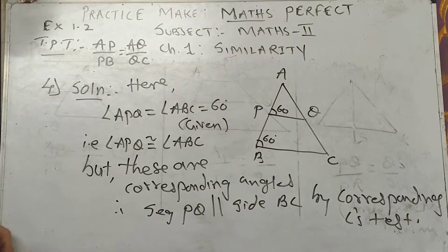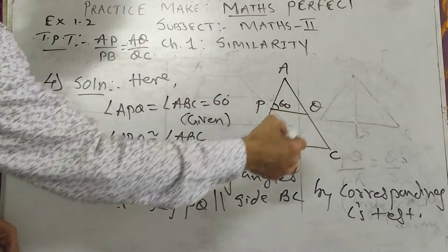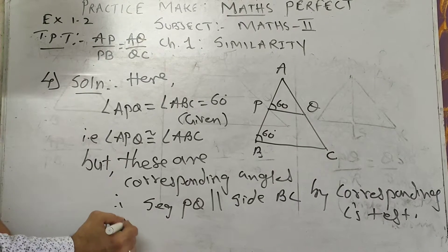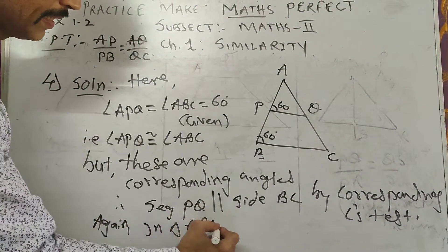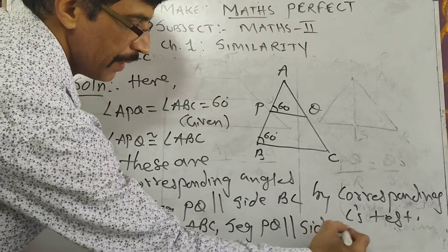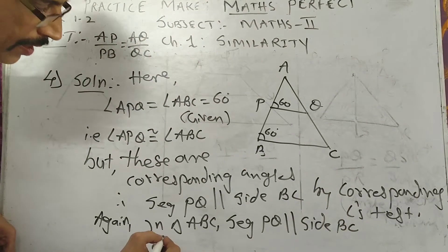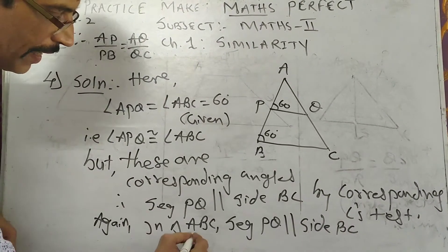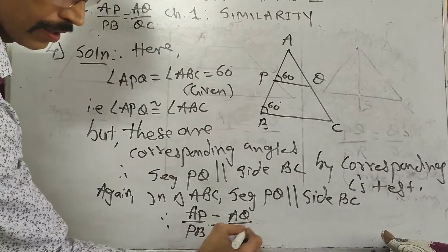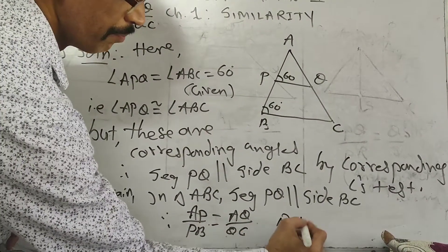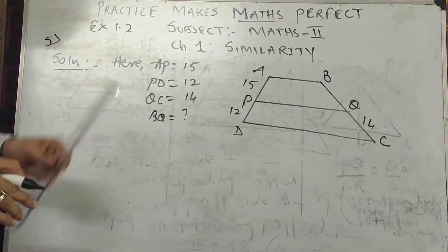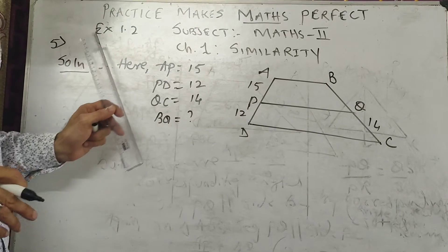Since PQ is parallel to BC, in triangle ABC we apply BPT directly. Therefore, AP upon PB is equal to AQ upon QC — by BPT. The sum is over. Now come to sum number 5 of exercise 1.2.